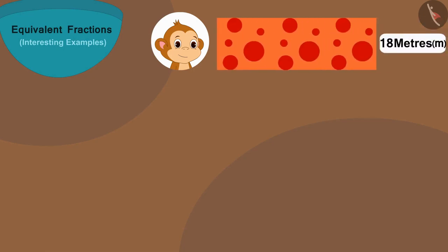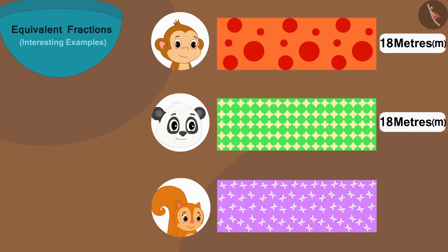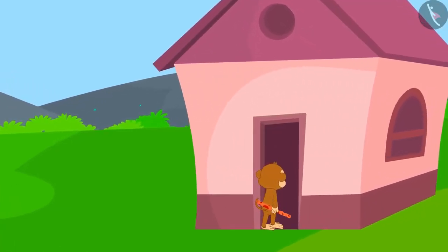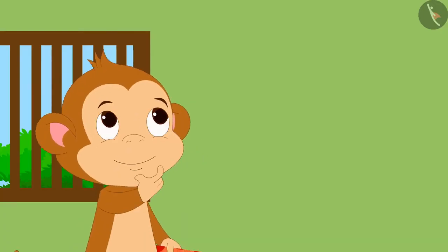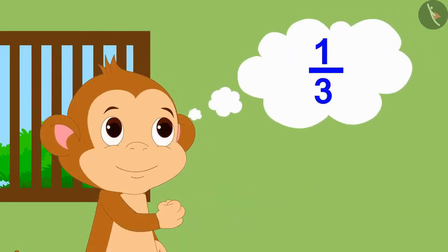Babban bought an 18-meter cloth of this design. Golu bought an 18-meter cloth of this design. Chanda bought an 18-meter cloth of this design. When Babban reached his house, he thought: why not give one-third of his cloth to Golu and take a piece of the same length of cloth from him?